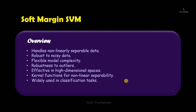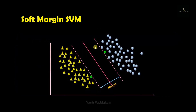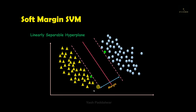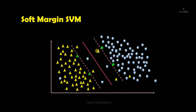Now let's revise some concepts before we move on to the mathematical intuition behind soft margin SVM. Let's say we have some data with two classes: one is the class of blue circles and one is the class of yellow triangles. This data is separated by a hyperplane as we have already seen in the previous video of hard margin SVM, where we covered the detailed mathematical intuition. One thing you can observe is that this data is linearly separated by a single hyperplane — hence it is called linearly separable data.